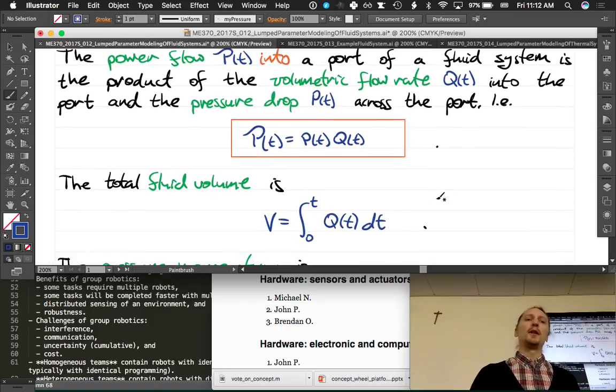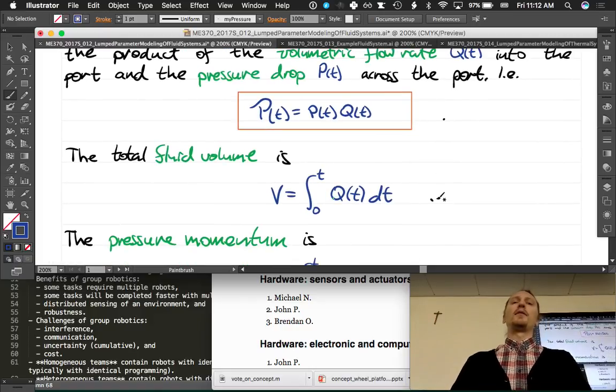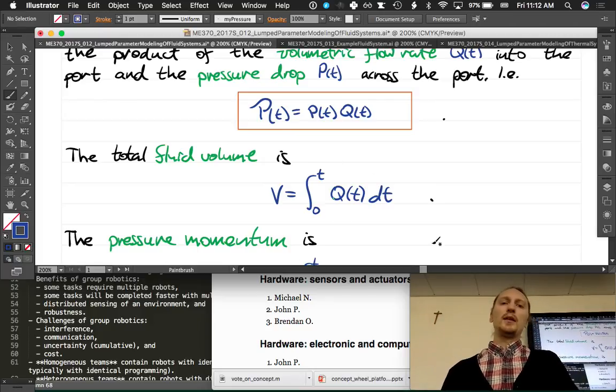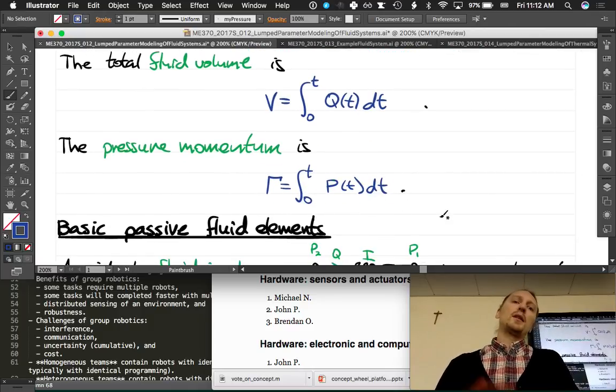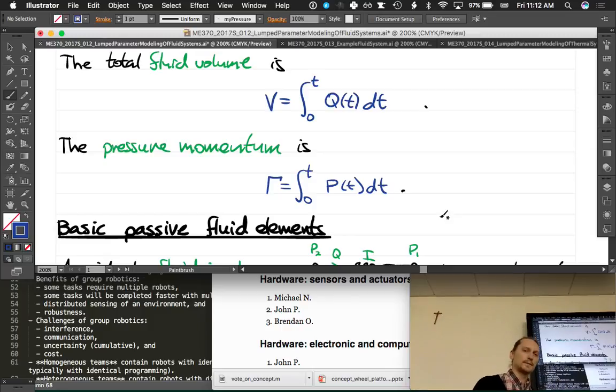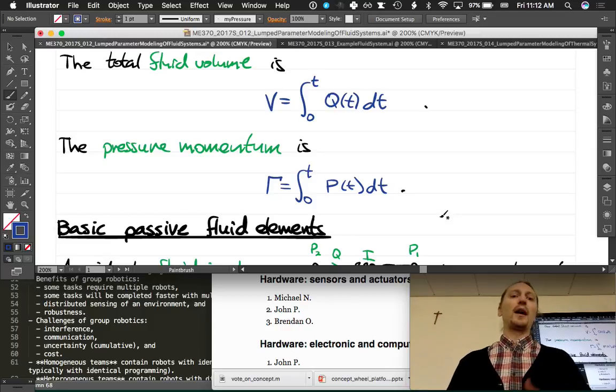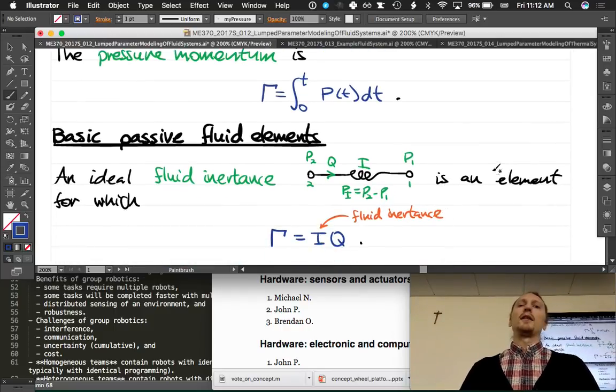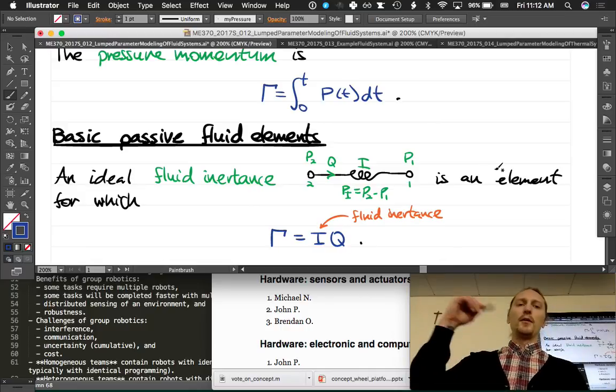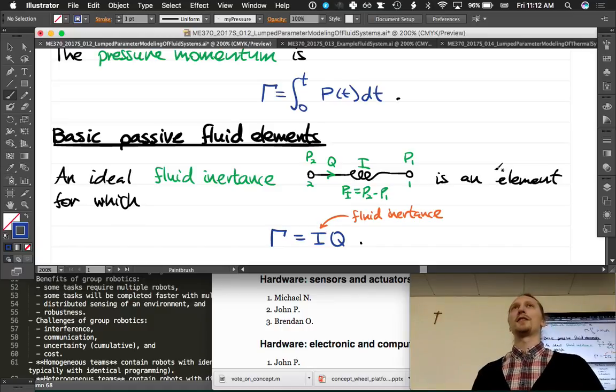The total fluid volume that would fill up, say, a tank if we had a flow rate Q going into that tank is going to be the integral over time of that volumetric flow rate. The pressure momentum, which is something that you probably haven't heard of before, if you integrate the pressure over time, that gives you a quantity called the pressure momentum, gamma. We use it a little bit in this class, but not very much. It's hard to get a good physical understanding. But when we go through this discussion below, we'll get a little bit of an understanding of it, I hope.